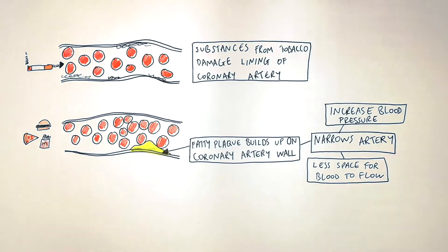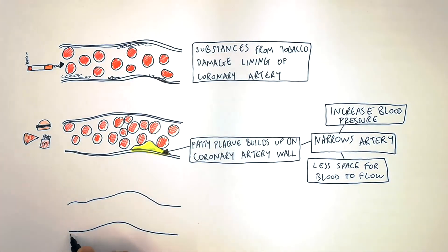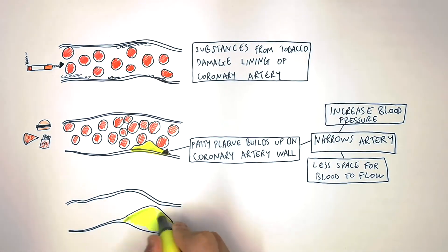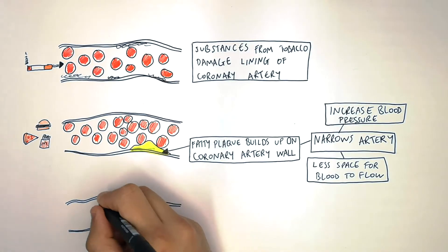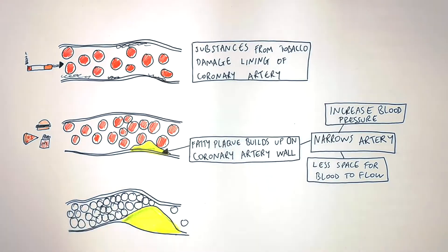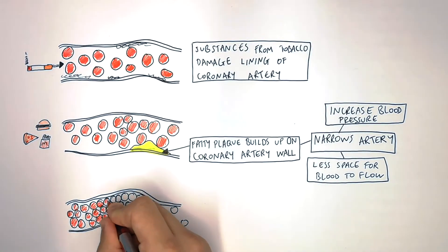This can cause a clot or a block. Over time, the fatty plaques can build up and cause a large blockage, a large clot of blood in the coronary artery, as you can see here.